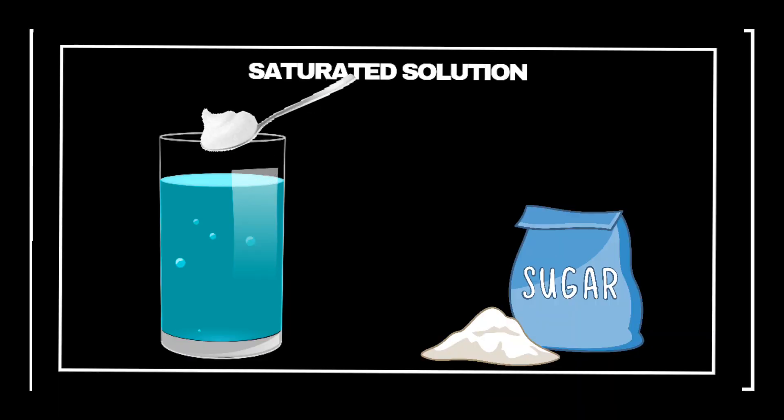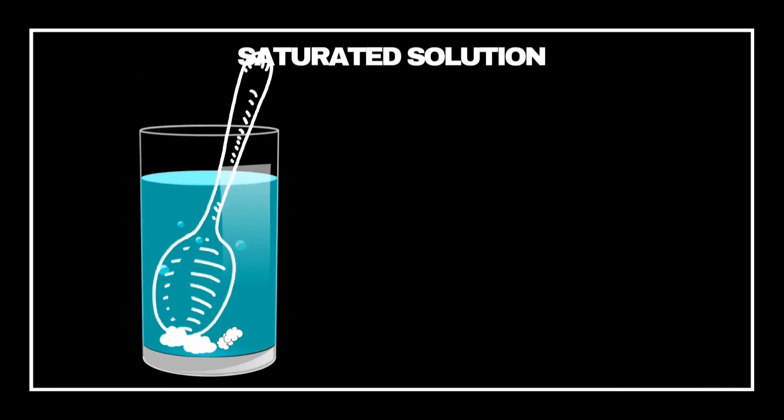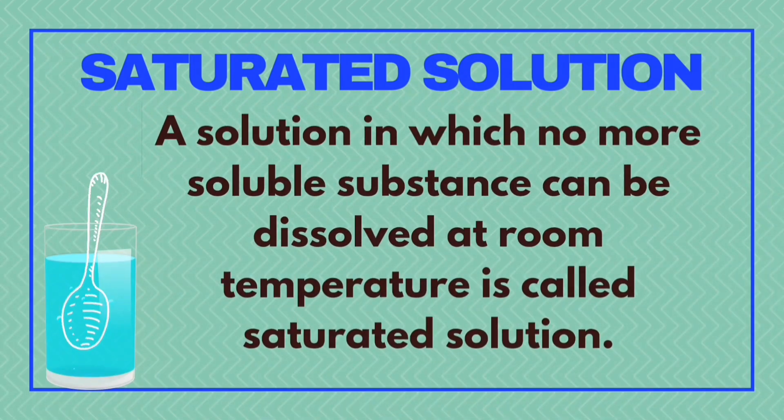Keep adding spoonfuls of sugar in a glass of water and stir the solution every time. After some time, you will notice sugar grains at the bottom of the glass. This shows that no more sugar can be dissolved. A solution in which no more soluble substance can be dissolved at room temperature is called a saturated solution.